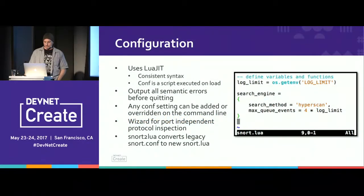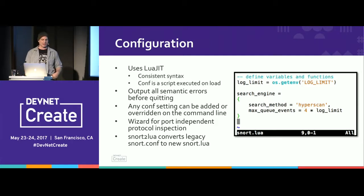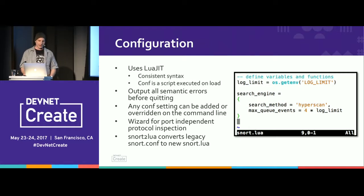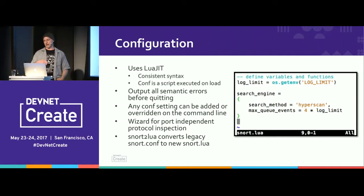Moving on to the underbelly: the configuration uses LuaJIT, giving us consistent syntax and a live script that executes when loaded — it can calculate values on the fly. Snort++ outputs all semantic errors before failing, and any configuration setting can be overridden on the command line using '--lua'. Since Snort++ is not backwards compatible, there is a utility called Snort to Lua that converts your 2.x config into 3.0 format.